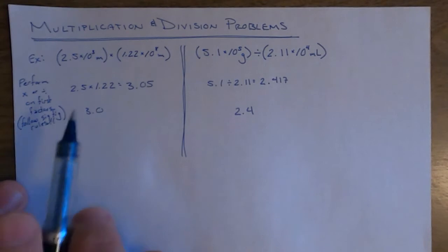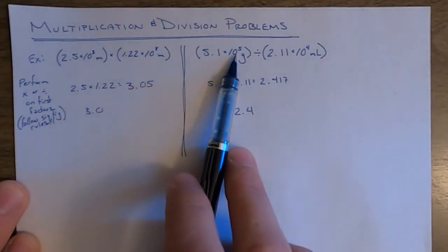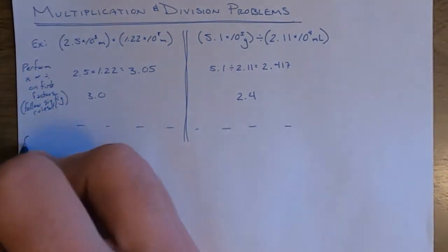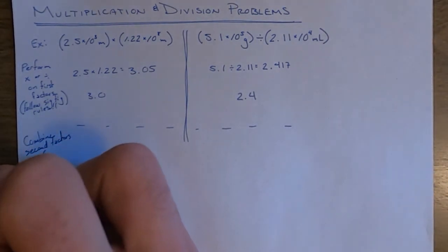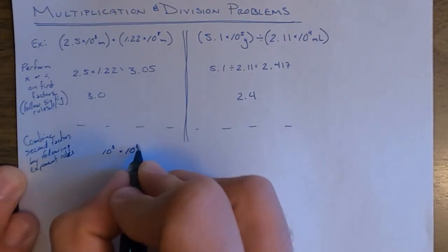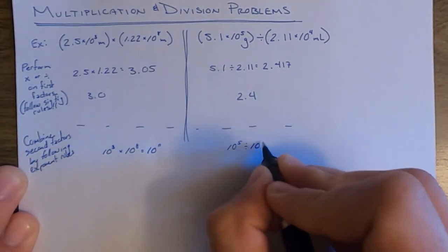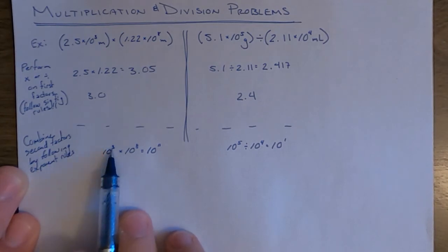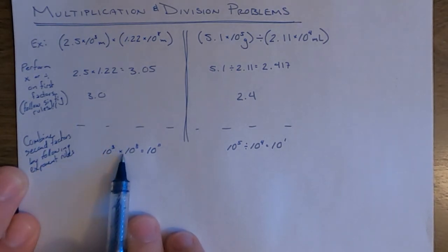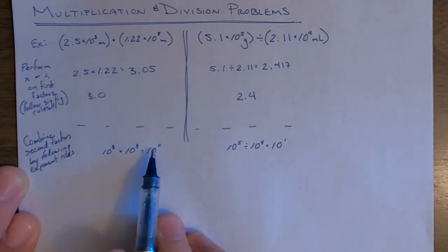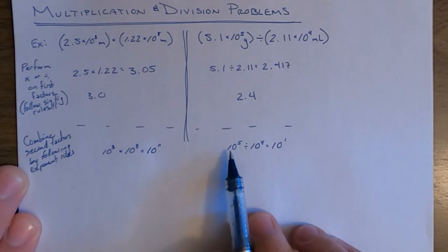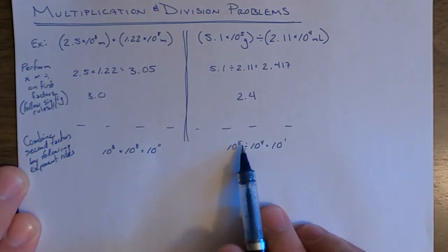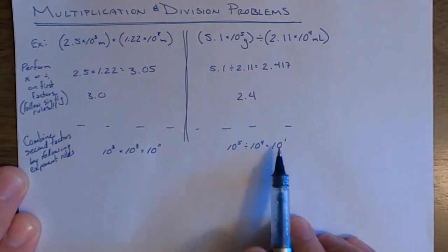The next step is to combine the second factors by performing those operations following exponent rules. When you have the same base — which is 10 in this case — and you multiply, you add the exponents: 10 to the third times 10 to the eighth power gives 10 to the 11th power. The opposite is true for division — if you have the same base of 10, you subtract the exponents: 10 to the fifth divided by 10 to the fourth gives 10 to the first power.